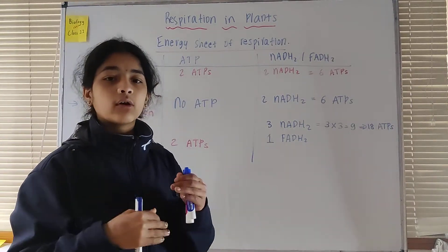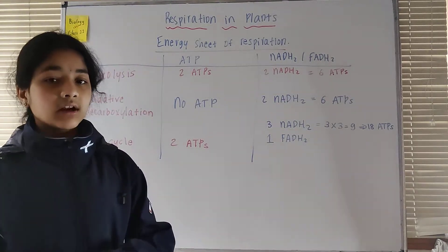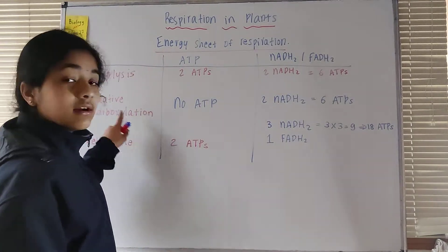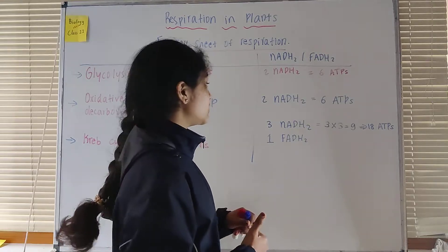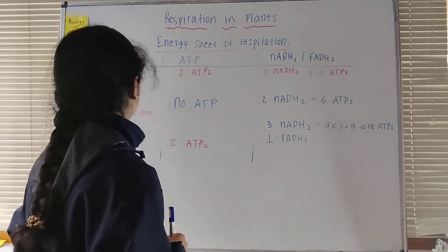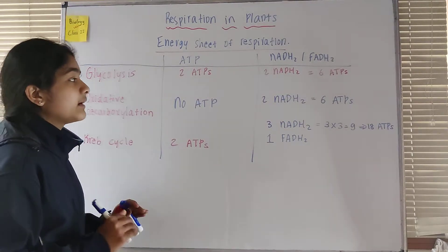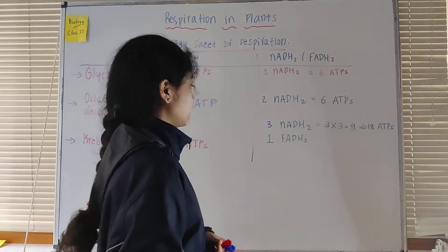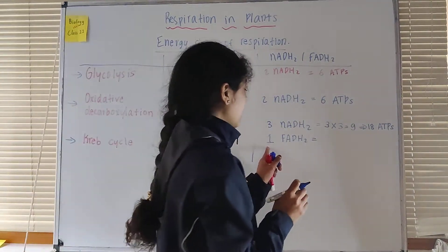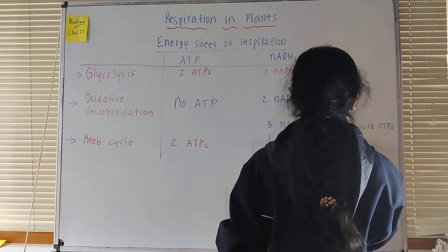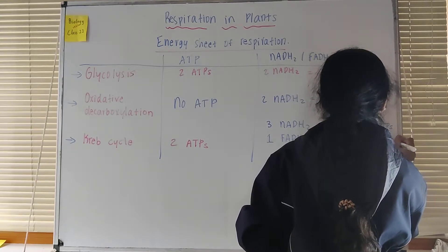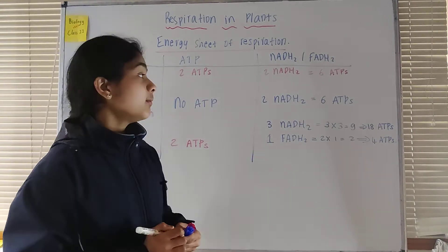Similarly in oxidative decarboxylation, only one NADH2 is formed per cycle, but since it happens twice we count two NADH2 worth six ATPs. For the one FADH2 in the Krebs cycle, each FADH2 is worth two ATPs, and doubling gives four ATPs. This is how we calculate ATPs from NADH2 and FADH2.